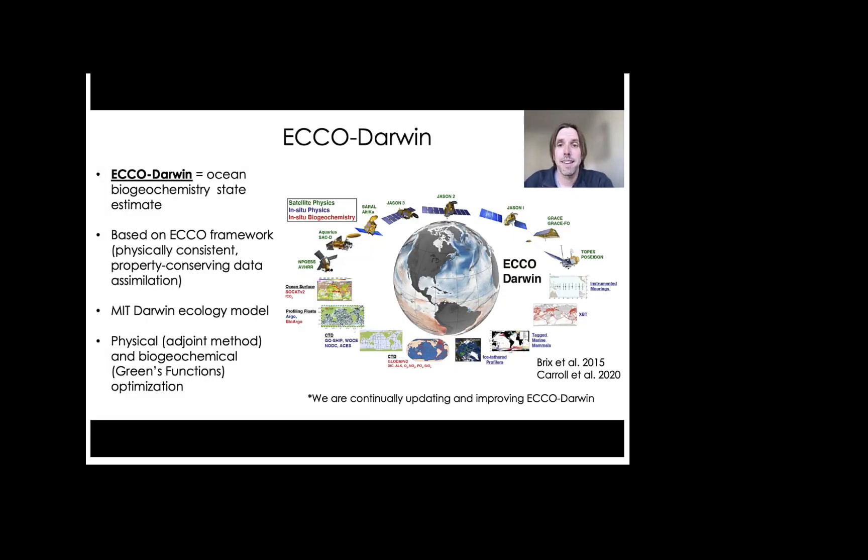We have developed the NASA-funded ECCO-Darwin model, which is a global ocean biogeochemistry state estimate. ECCO-Darwin is based on the ECCO modeling framework, which assimilates satellite, shown here in green text in the schematic, and also in-situ observations, which are shown in blue and red here. And this assimilation is done in a physically consistent property conserving manner, which means there are no spurious sources or sinks of physical and biogeochemical tracers.